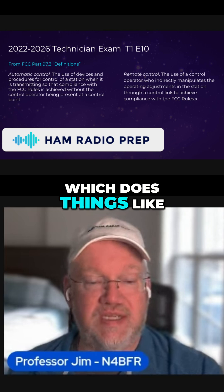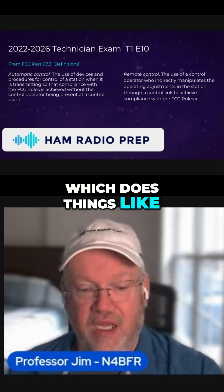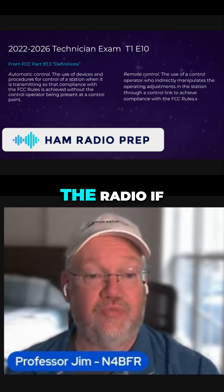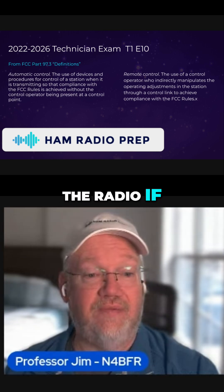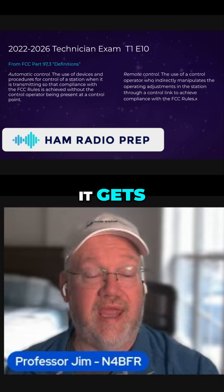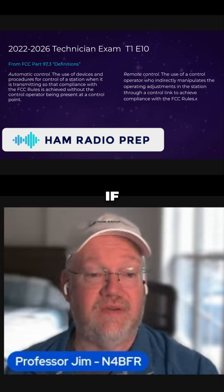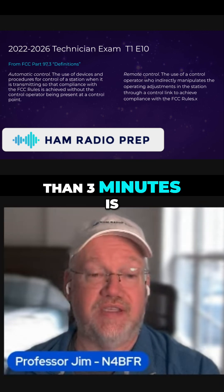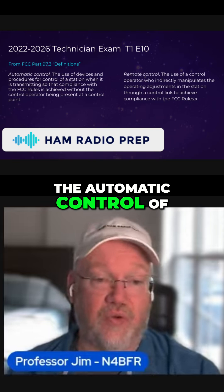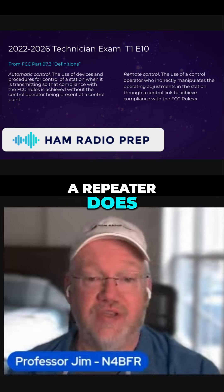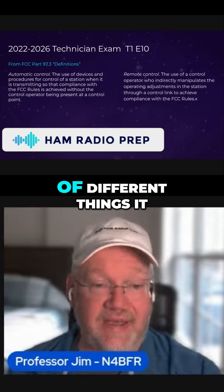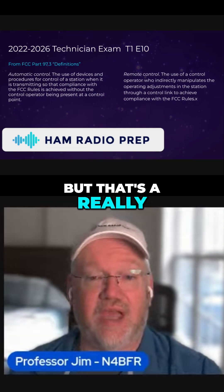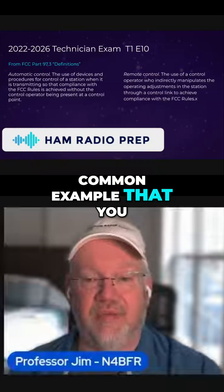So that is having a repeater controller and automatically controlling the repeater, which does things like turning off the radio if it's been transmitting for more than three minutes — that's one common example of what automatic control of the repeater does. There are a lot of different things it can do, but that's a really common example you might see.